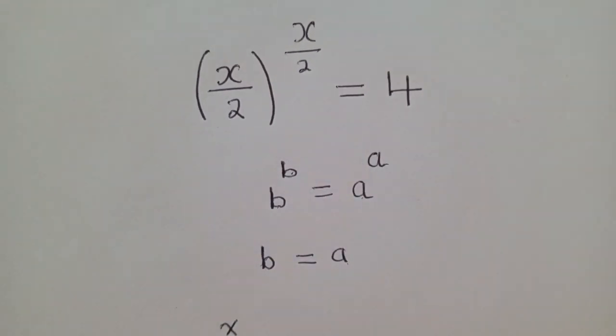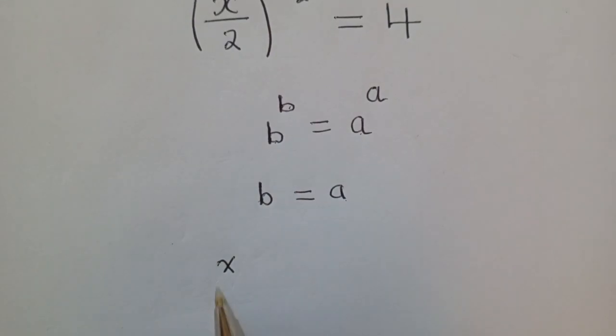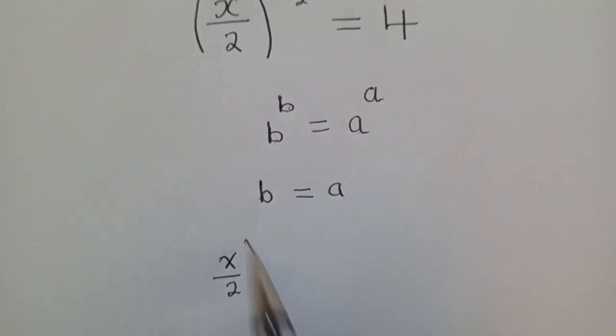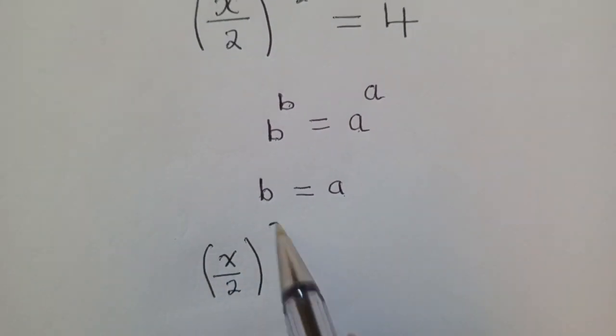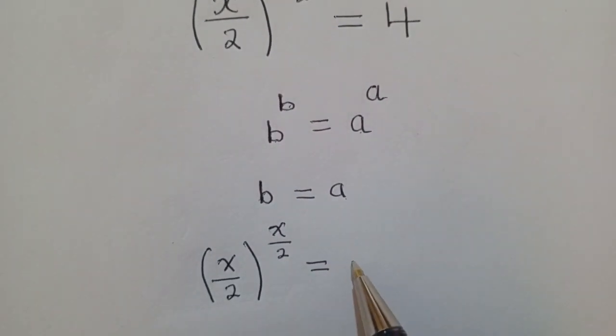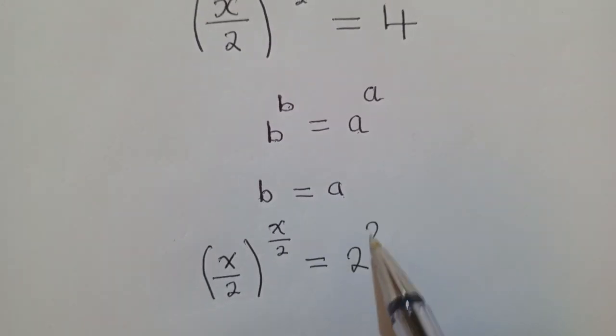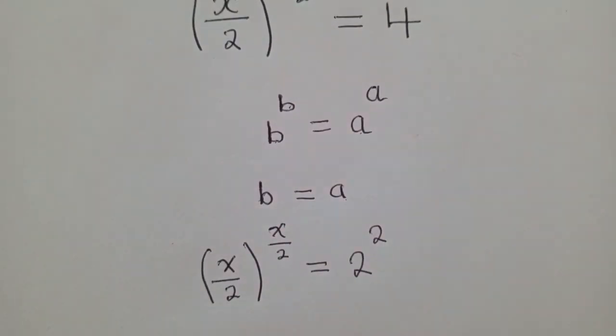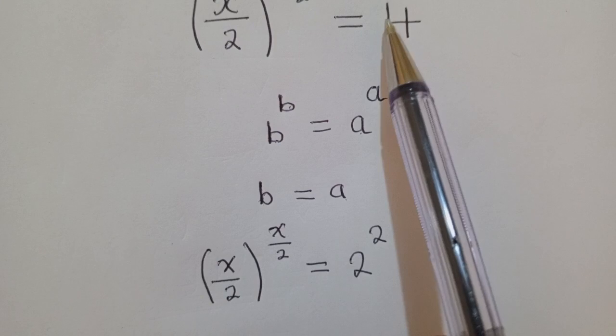X, okay, you can see X there, over 2 power x over 2 equal to, here we shall have 2 power 2. Because we know that 2 power 2 is the same as 4.